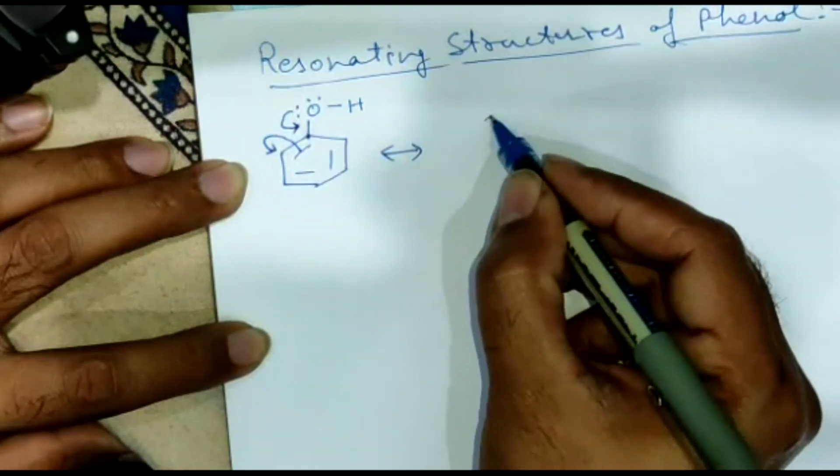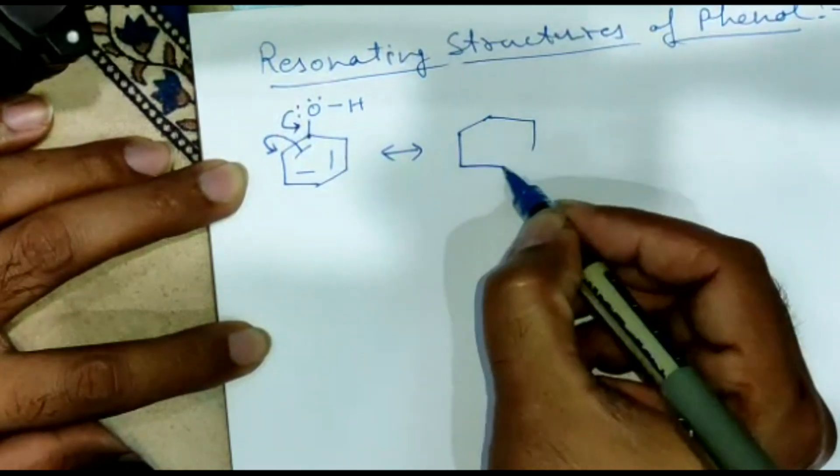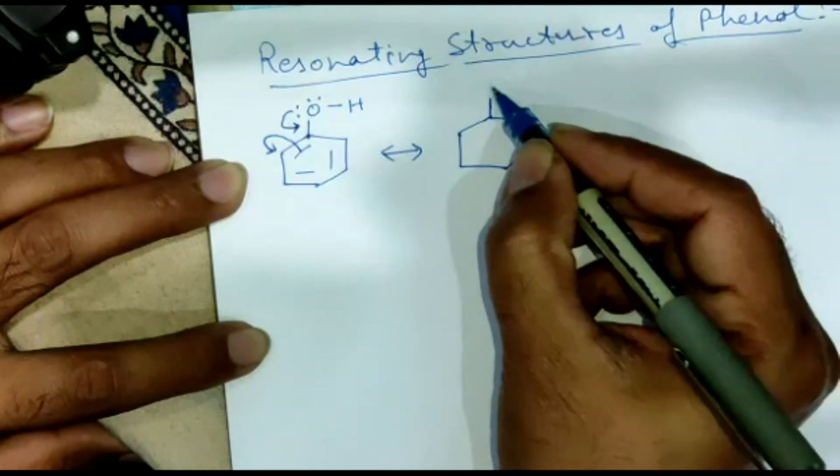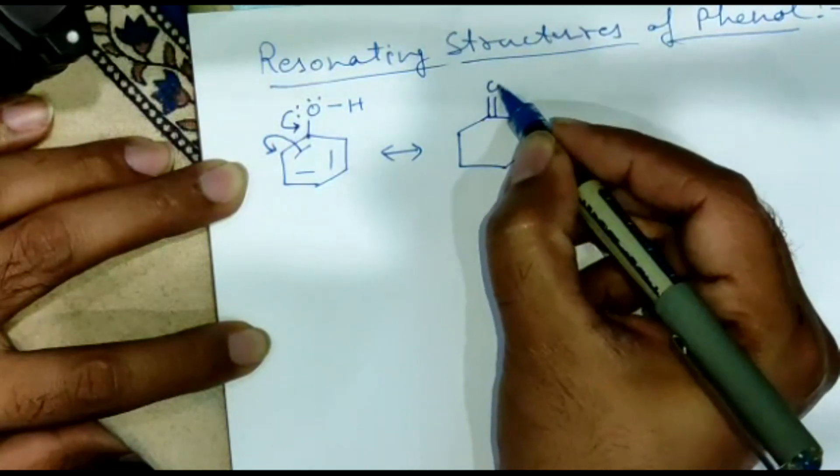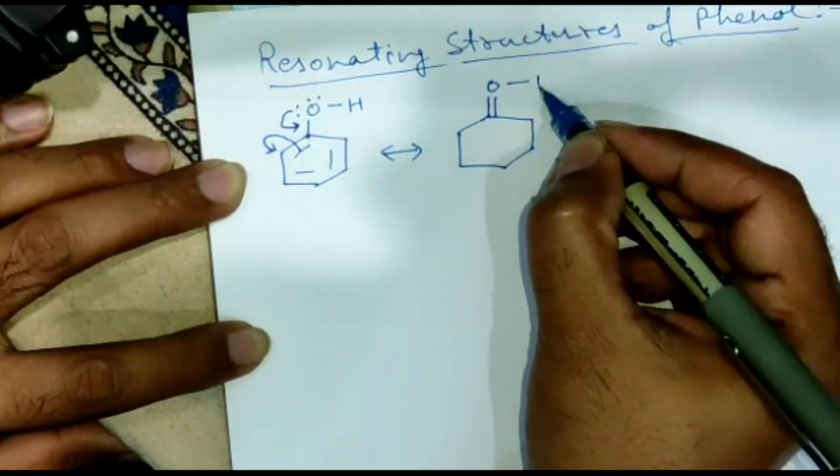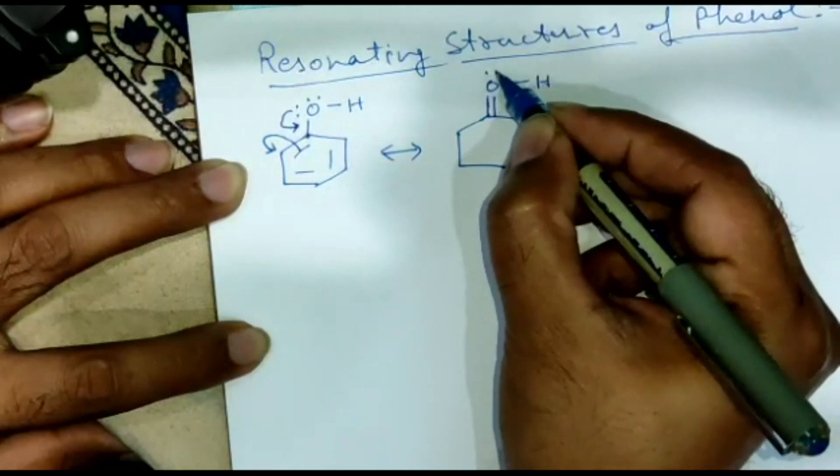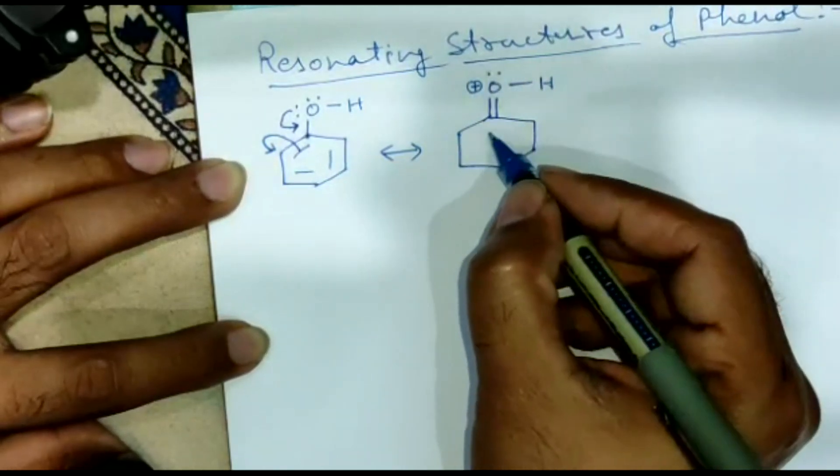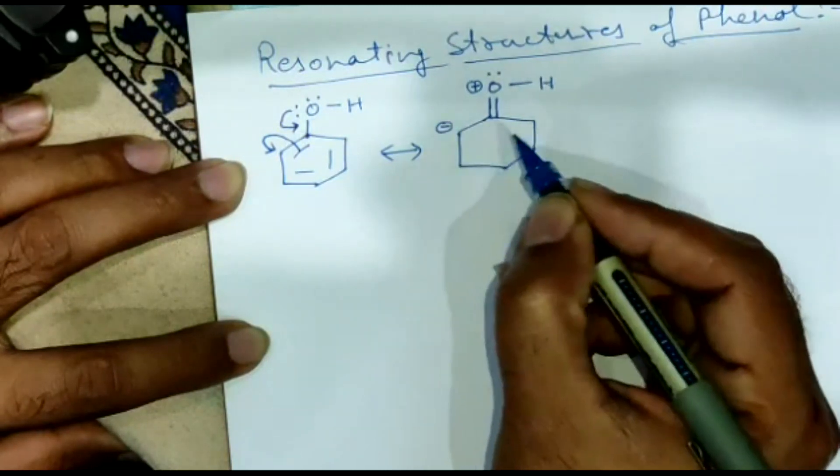So the next structure which we will be drawing will be something like this in which oxygen and carbon will have a double bond with one lone pair on the oxygen atom and a positive charge, and here comes a negative charge.